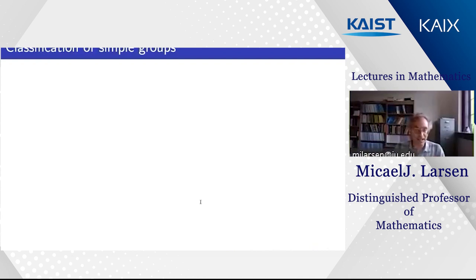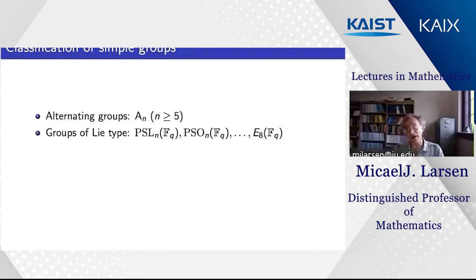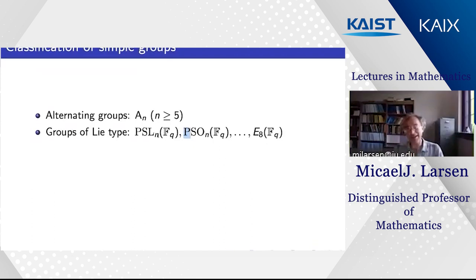Let me quickly recall the classification theorem of finite simple groups. We have the alternating groups Aₙ for n>4, which are the even permutations on n elements. Then there are the groups of Lie type, which morally speaking arise by taking a complex simple Lie group and plugging in elements of a finite field instead of complex numbers. For example, SLₙ(𝔽_q) consists of n×n matrices with determinant one over the finite field 𝔽_q.